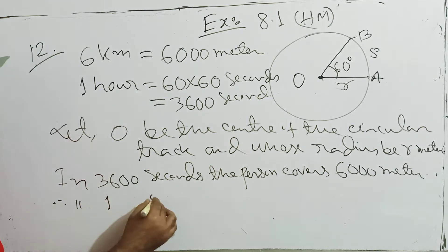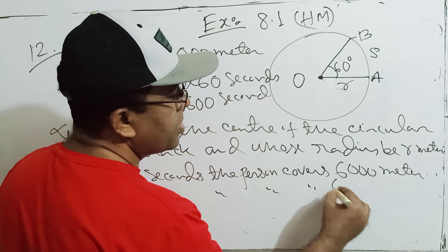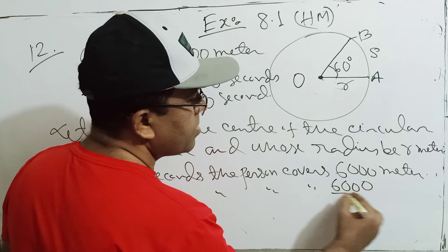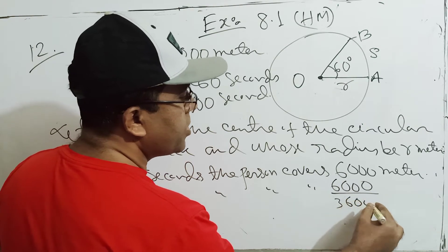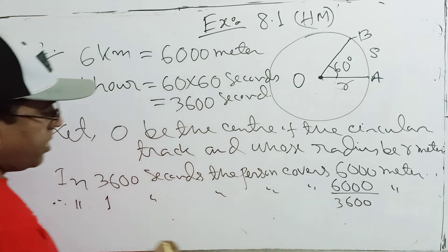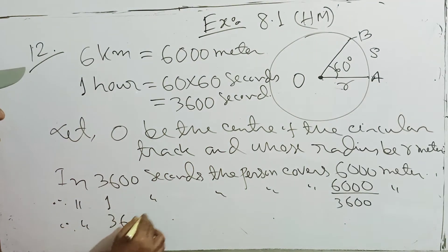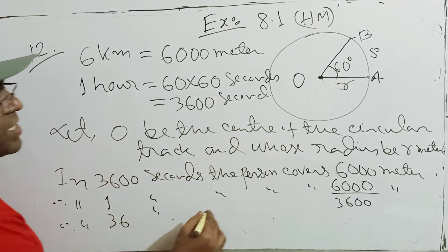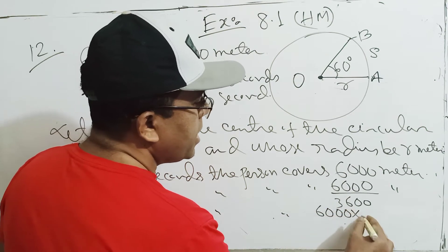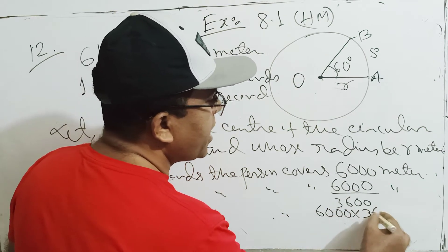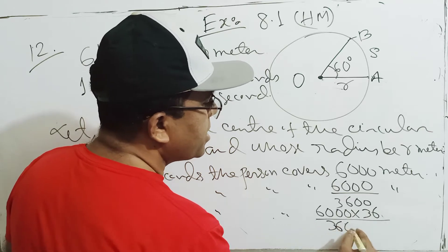In one second, the person can cover a certain distance. So in 36 seconds, the person covers 6000 divided by 3600 multiplied by 36 meters.